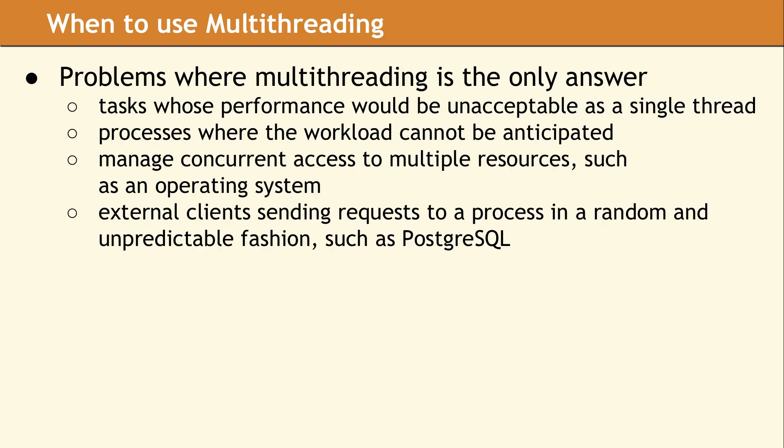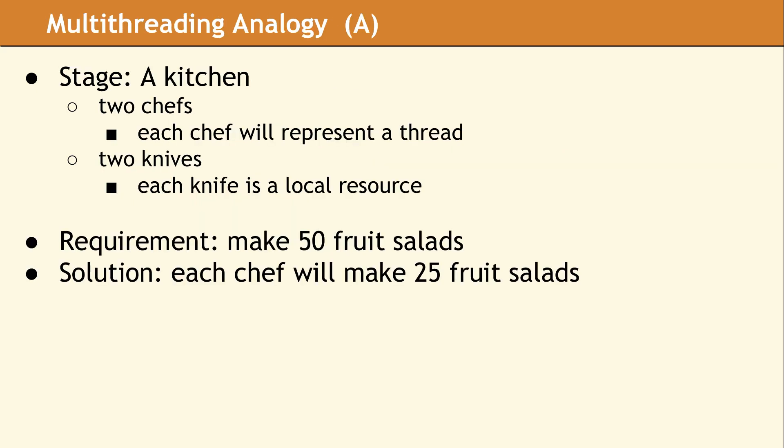There are also a set of problems for which multithreading is the only solution, but it is not straightforward because these are not simple to decompose into individual tasks. These problems arise when you have a large amount of resources, such as disk drives and network sockets managed by an operating system, and a large number of external clients making requests in an arbitrary order. Managing access to these resources in a multithreaded environment can be very challenging, but an operating system which was not multithreaded would exhibit very poor performance. So let's look at some sample problems.